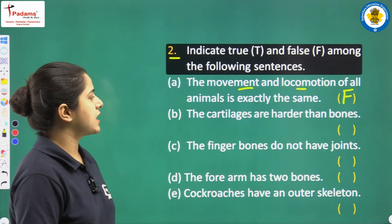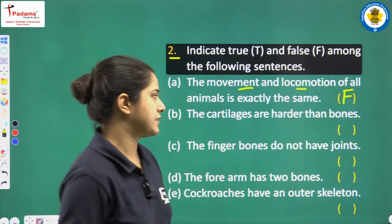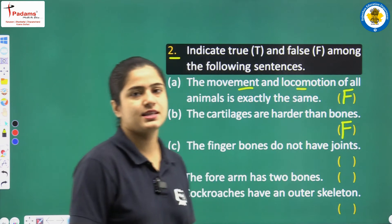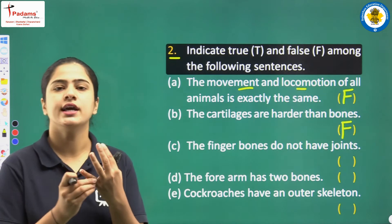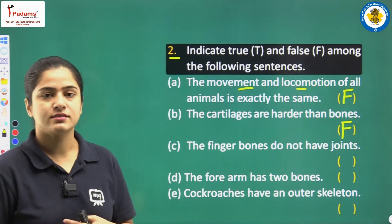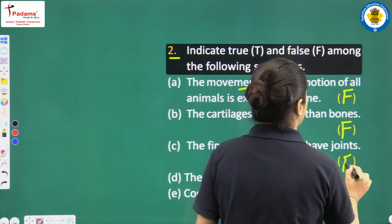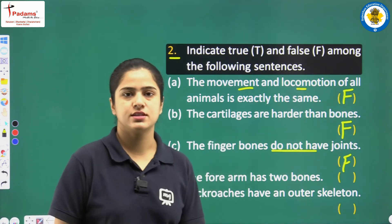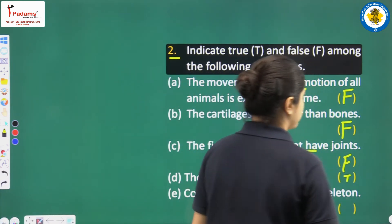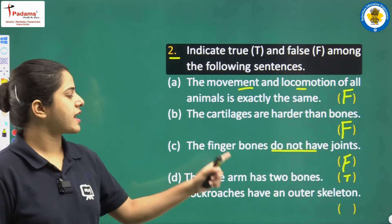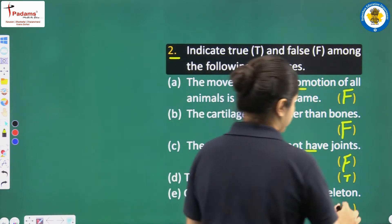Next: cartilages are harder than bones — no, students, cartilages are not at all harder than bones, so this is false. The finger bones do not have joints — this is also false. The forearm has two bones — this is true. Cockroaches have an outer skeleton — yes, this is completely true.